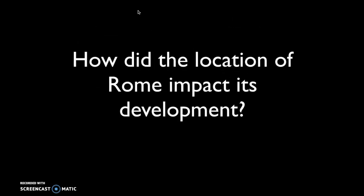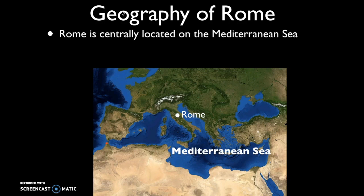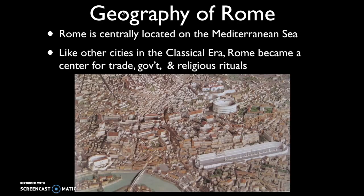The first big question: how did the location of Rome impact its development? The city of Rome is centrally located on the Mediterranean Sea. It's also located on the Tiber River in the center of the Italian peninsula, which meant that it had a geographically strategic spot. This would allow it to be accessible to a number of existing trade routes across the Mediterranean Sea that were first developed by the Phoenicians and then later used by the Greeks.